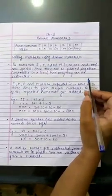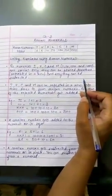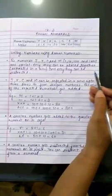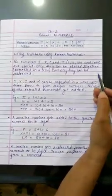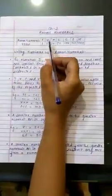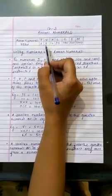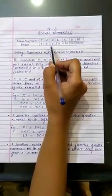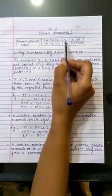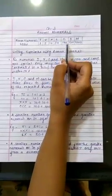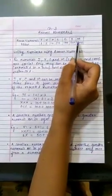Now how to read Roman numerals? So there are seven basic symbols that we use to read and write Roman numerals. Roman numeral I stands for 1, V stands for 5, X stands for 10, L stands for 50, C for 100, D for 500 and M for 1000.